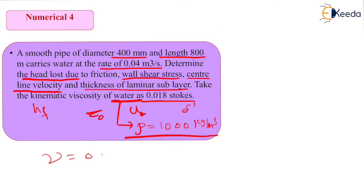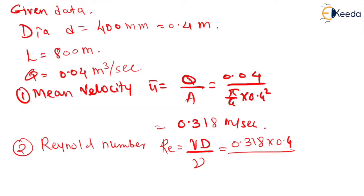Here this ν is 0.018 stokes, that is equal to 0.018 × 10⁻⁴ meter² per second. Generally we use the equation as 1 stoke equals 10⁻⁴ meter² per second. Putting that value 0.018 × 10⁻⁴, we have Reynolds number value that is equal to 70.67 × 10³. And it is clear that it is greater than 4000.